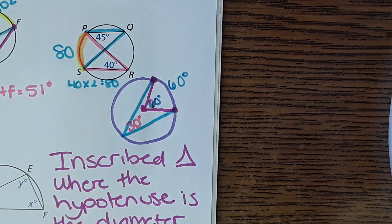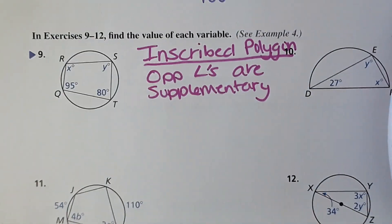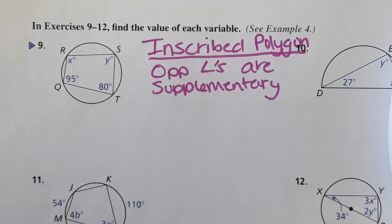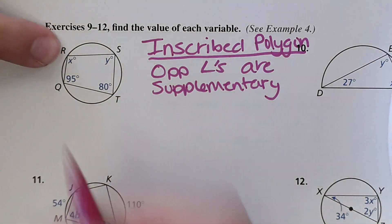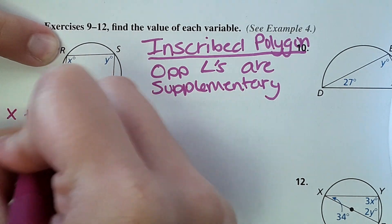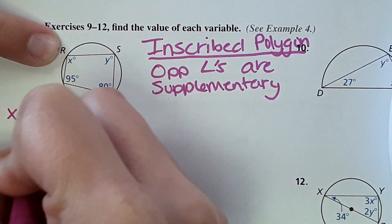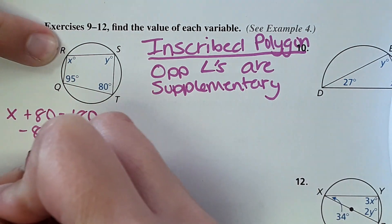Now we move to inscribed polygons. The key rule: opposite angles of an inscribed quadrilateral are supplementary. So x degrees and 80° are opposite, meaning x plus 80 equals 180, and x equals 100.